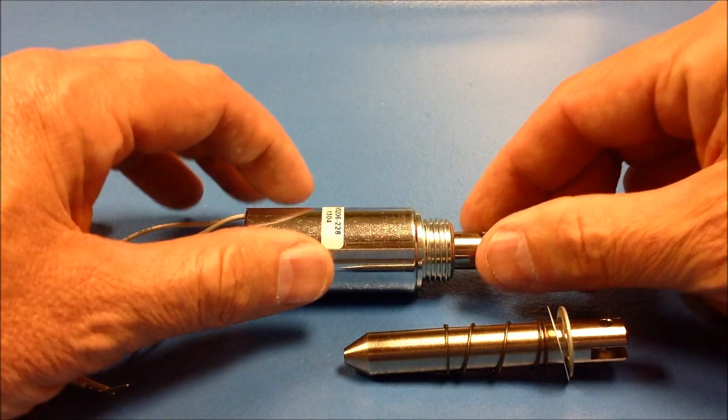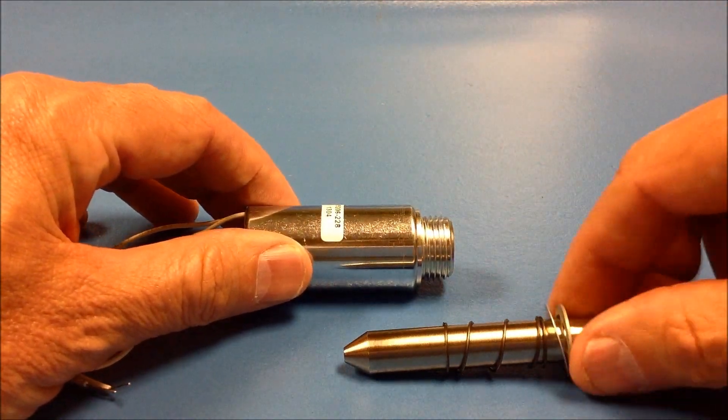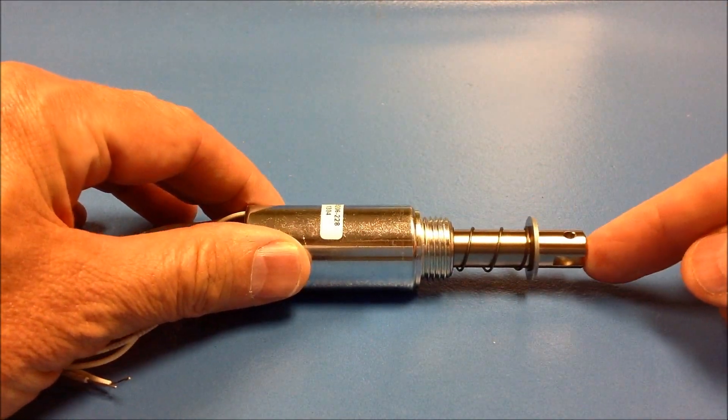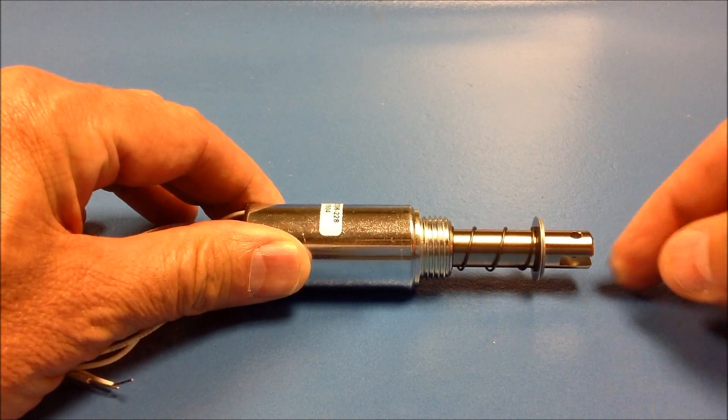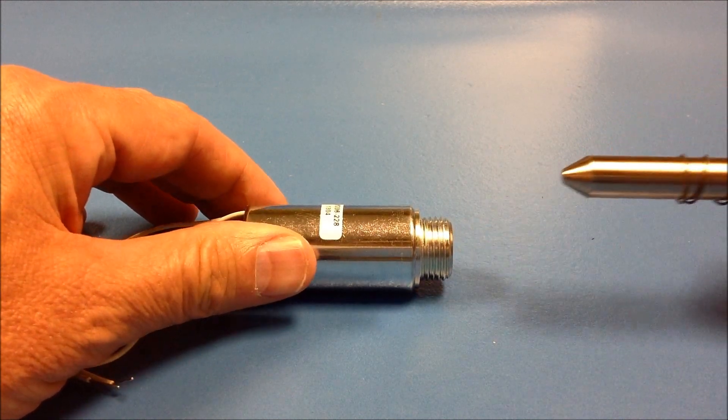So you would just replace this plunger, put this in, and you could test it with this dark colored spring, which is the longer or stronger spring, and determine how well that works for you.